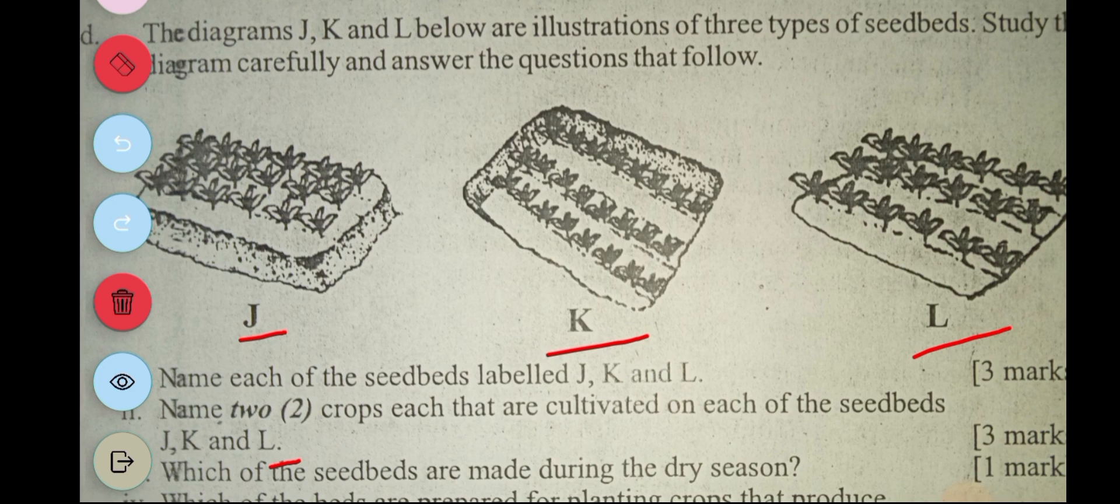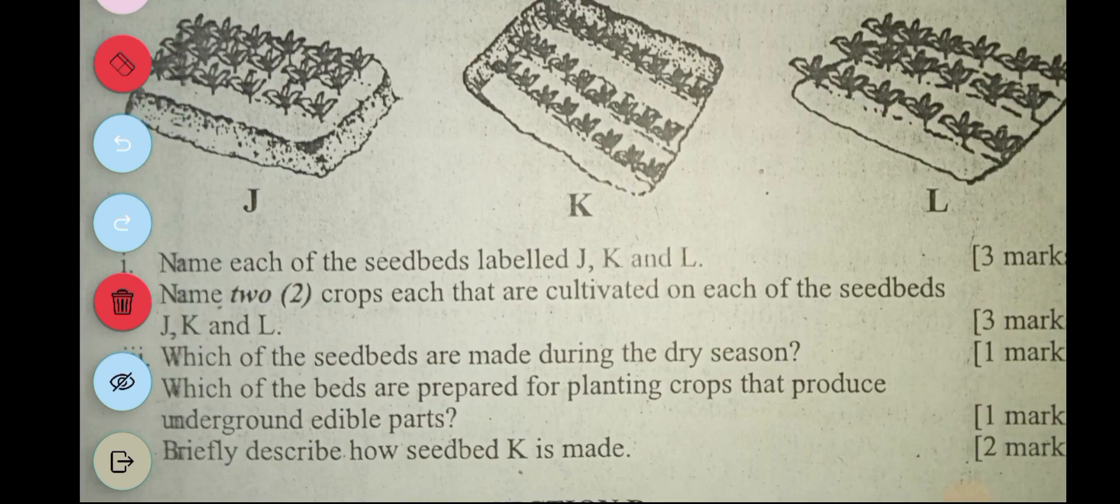The next one says: name two types of crops each that are cultivated on each of the seed beds. So crops grown on the raised seed bed include coco yam and then yam and then potato as well. With the sunken one, we have vegetables - so we have tomato and pepper. Then with the flat bed, we have maize and then cotton plants.